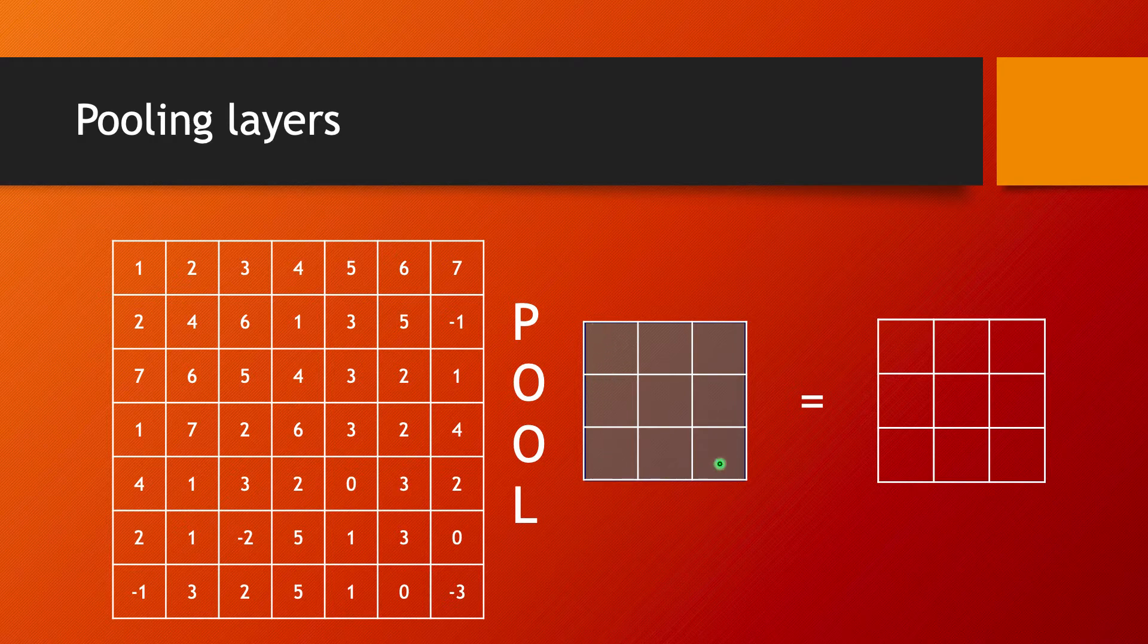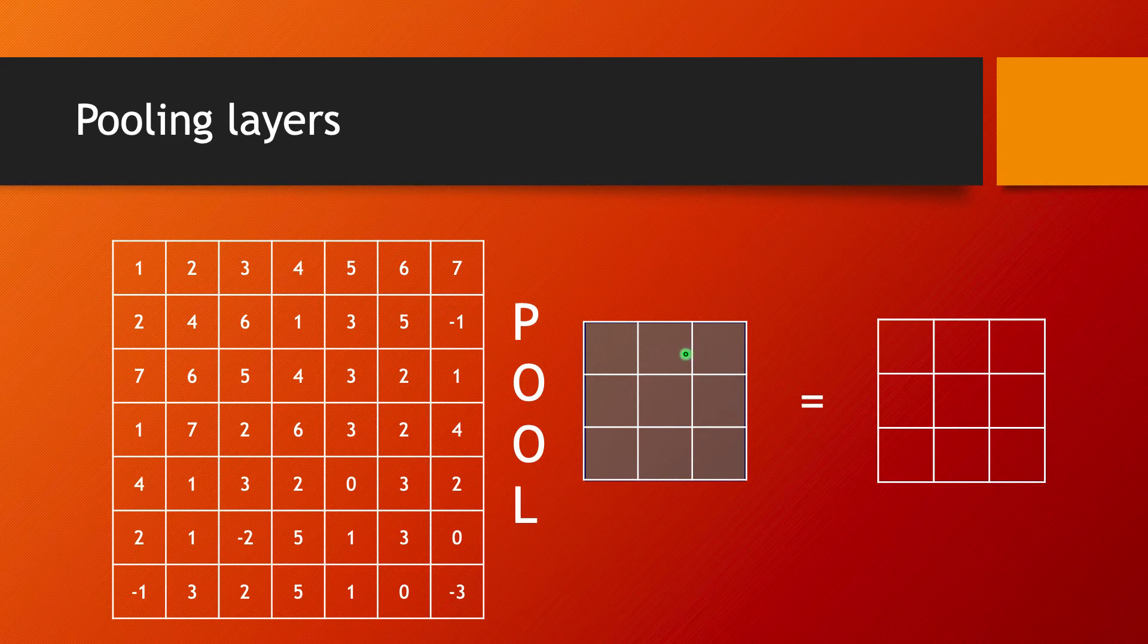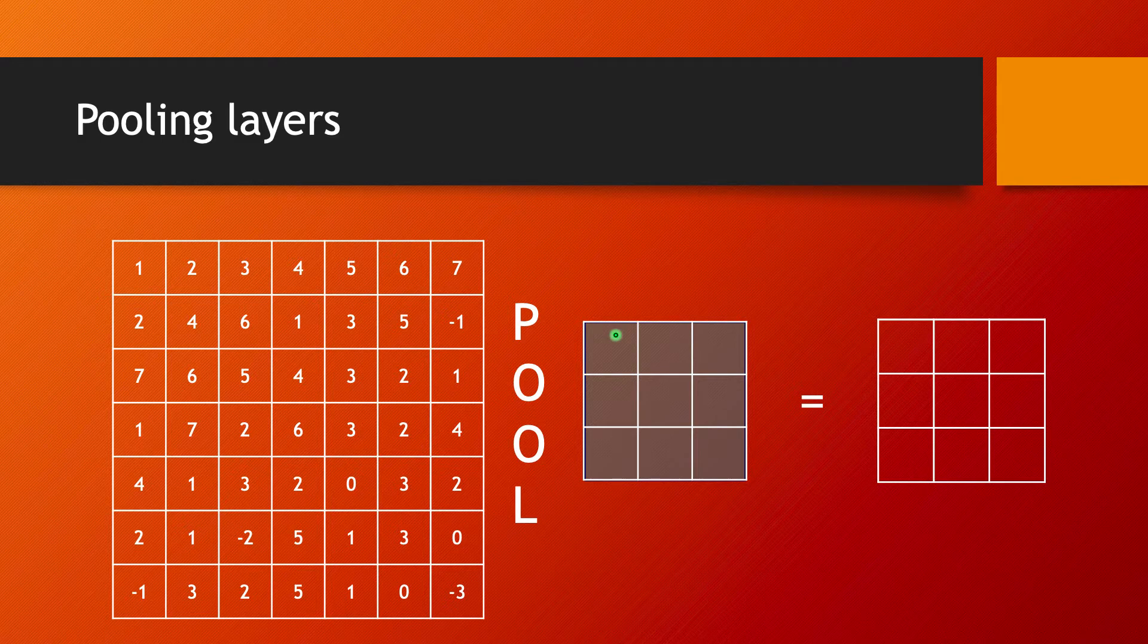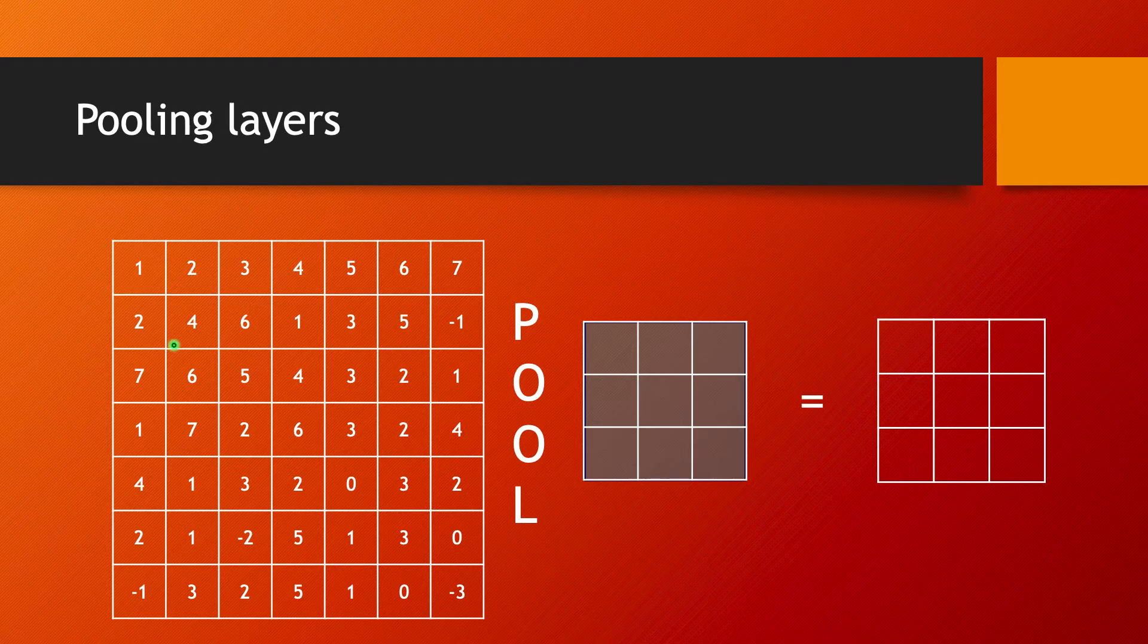The idea is that similarly as done in a convolutional layer computation, this filter is going to scan our input, starting from the top left corner going left to right and top to bottom.